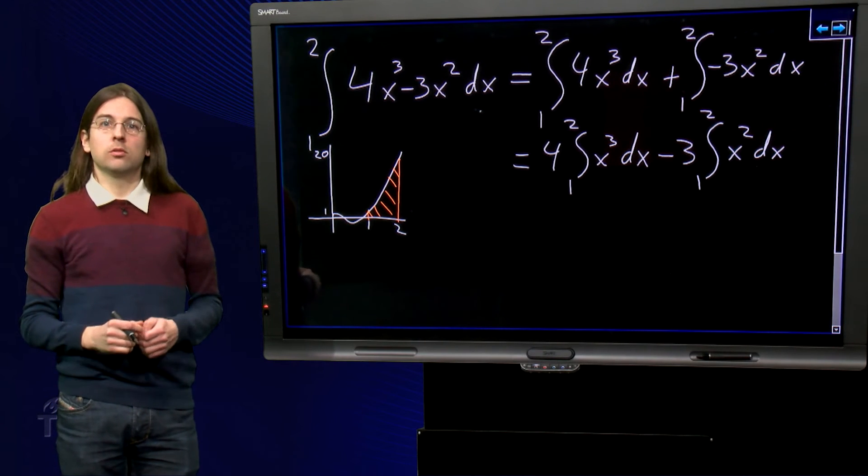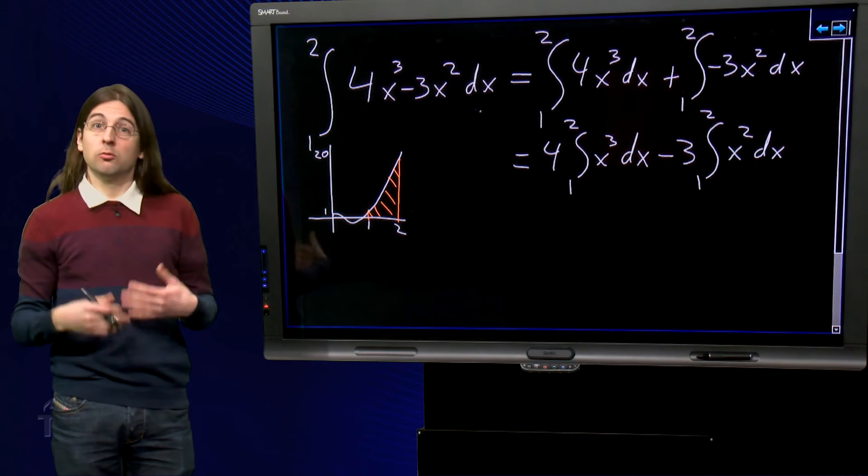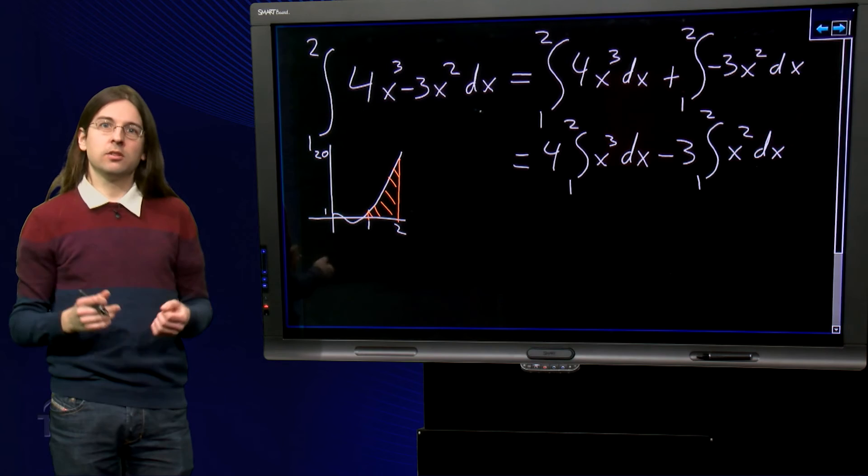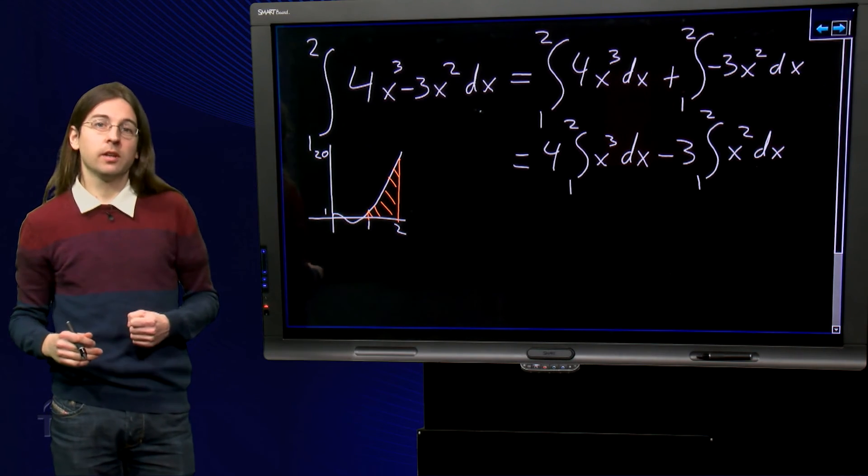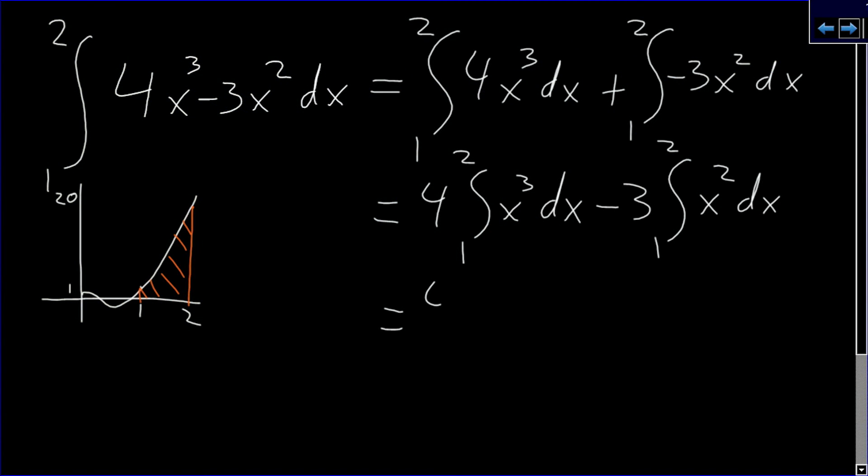As we know that the integral of x to the n equals 1 over n plus 1 times x to the n plus 1, we can use this to calculate these two integrals and obtain 4 times 1 quarter x to the power 4